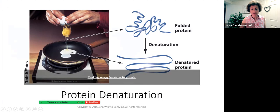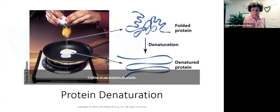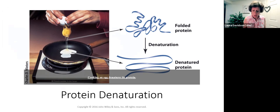Denaturation sounds like an overall bad thing, but remember, cooking denatures protein and we can still use that denatured protein. Because what the body needs from protein are the amino acids, not the intact protein. In fact, protein is denatured as part of digestion in the stomach due to acid. The acid in the stomach denatures the protein, so then the enzymes can do their work.